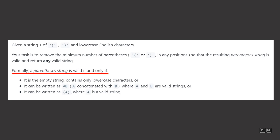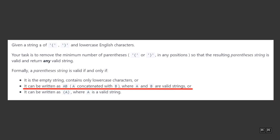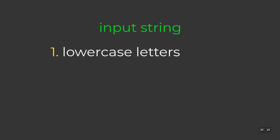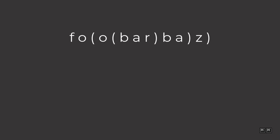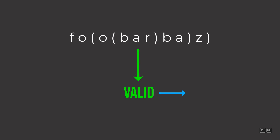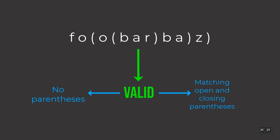Formally, a parentheses string is valid if and only if it is the empty string, contains only lowercase characters, or it can be written as AB (A concatenated with B) where A and B are valid strings, or it can be written as (A) where A is a valid string. For this problem, we are given a string that can consist of lowercase letters, open parentheses, and close parentheses. The goal is to remove the minimum number of parentheses so that the string becomes valid — a string with matching open and closing parentheses or no parentheses at all.